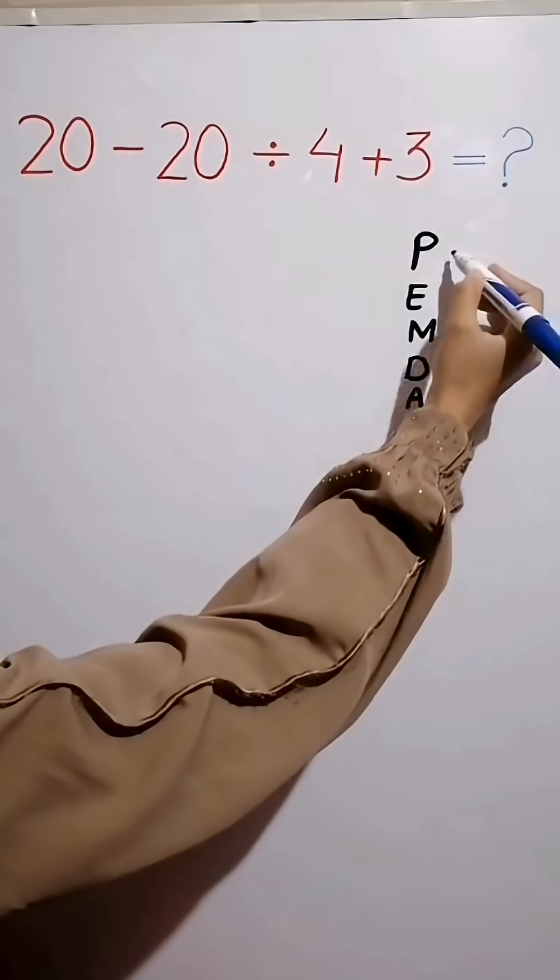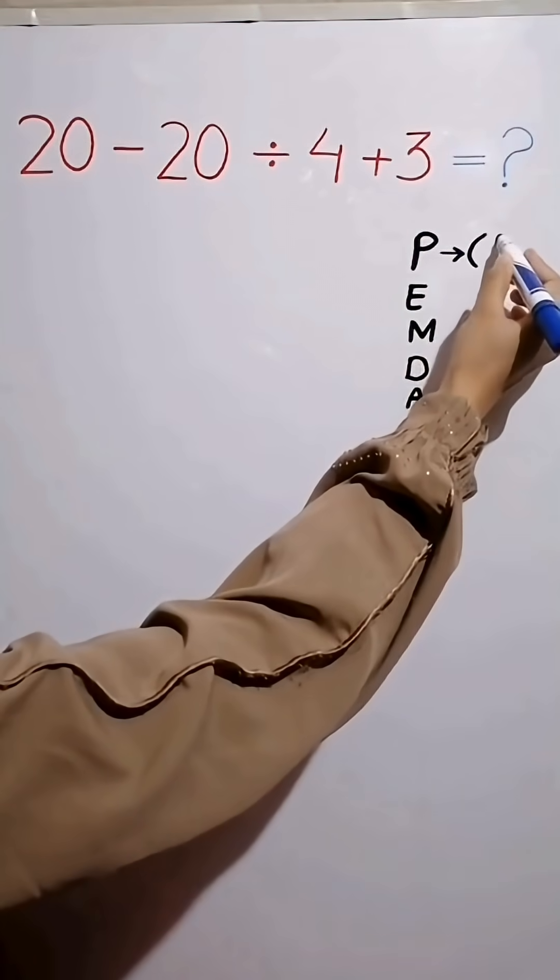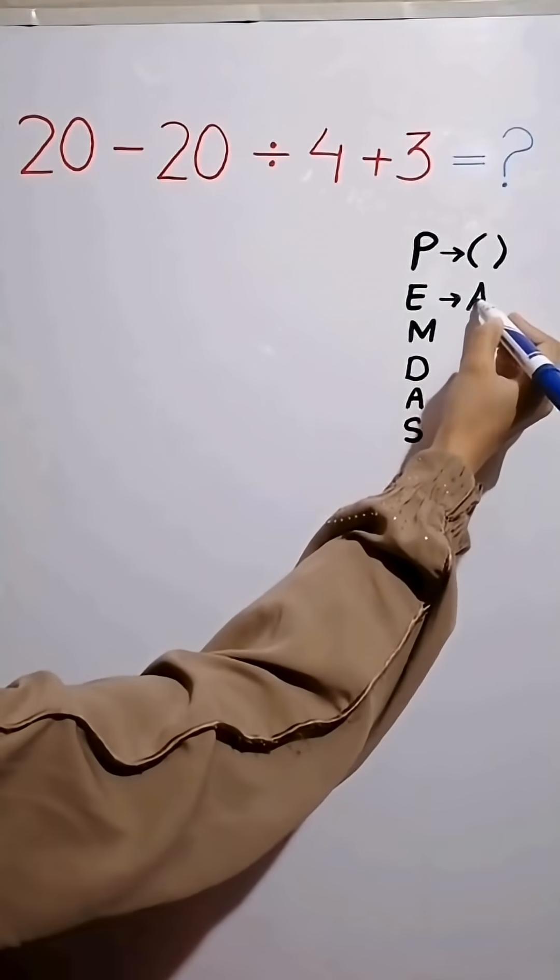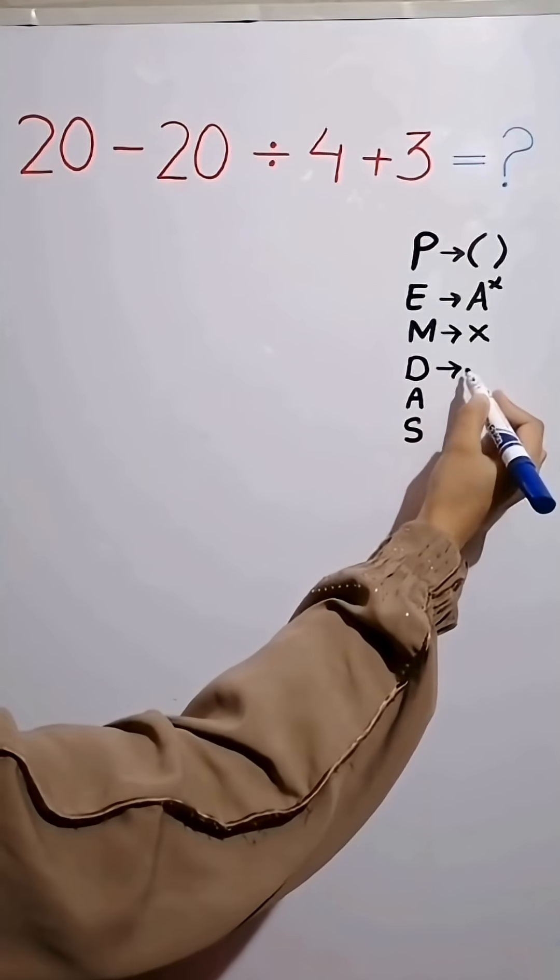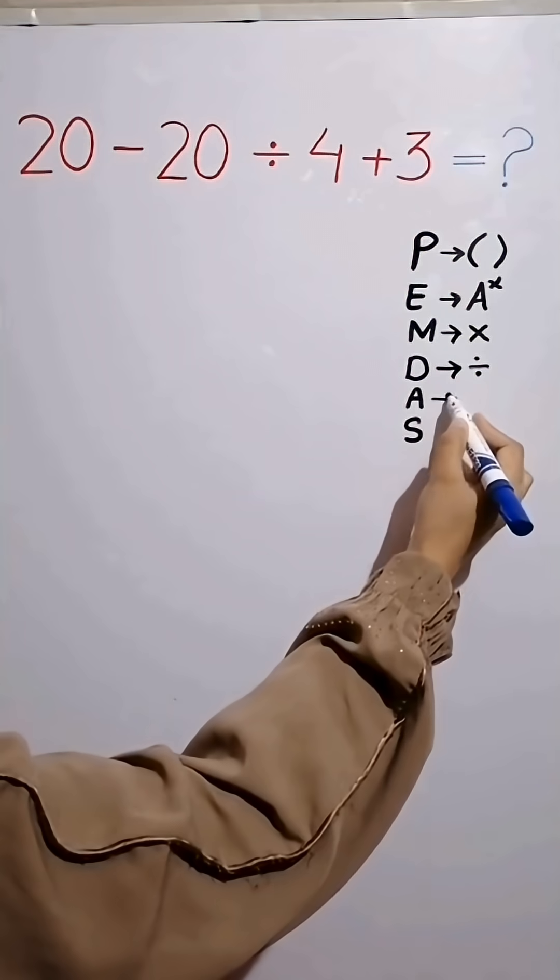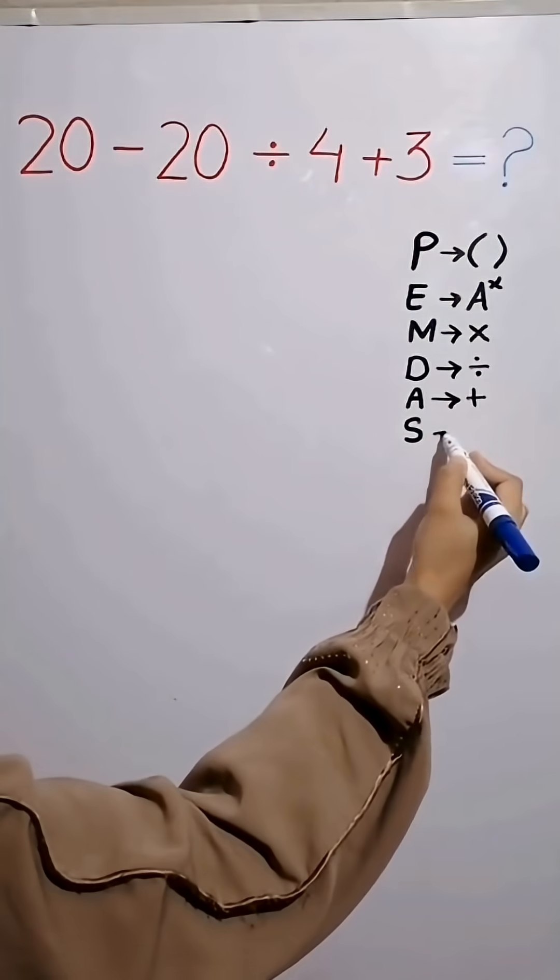In this rule, P stands for parentheses, E stands for exponent, M stands for multiplication, D stands for division, A stands for addition, and S stands for subtraction.